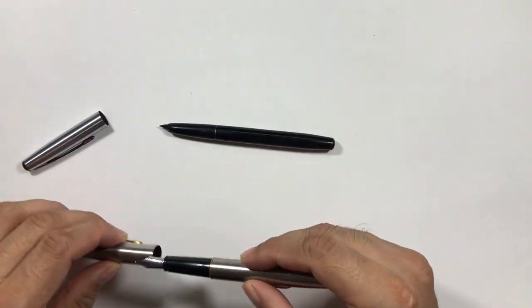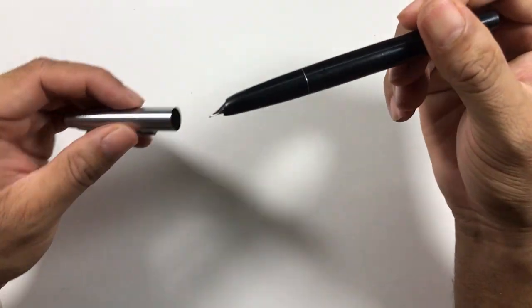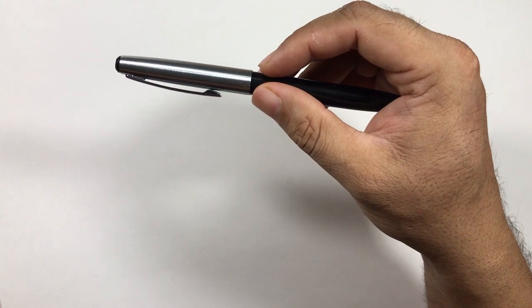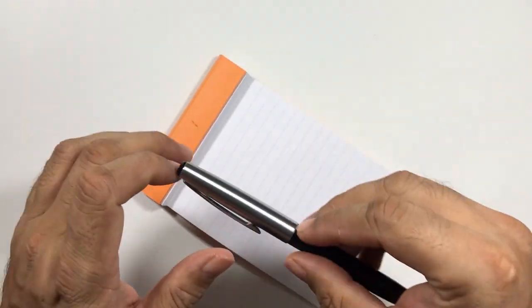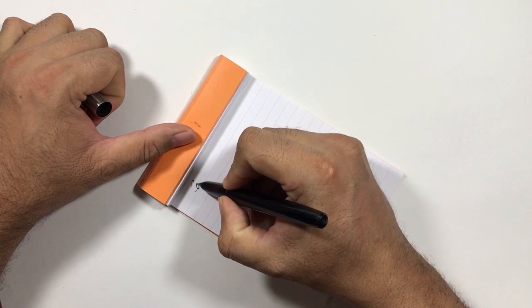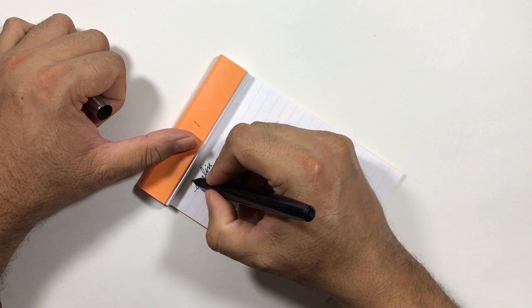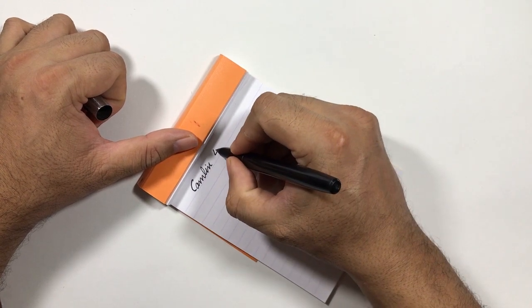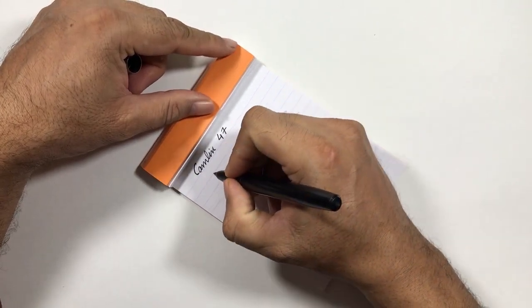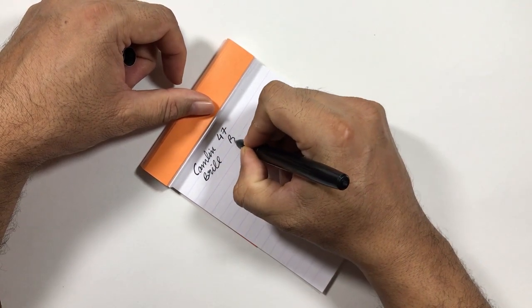Let's have a small writing sample. There is a skip right away. Kemlin 47 is kind of a vintage pen. Ink is Brill black.